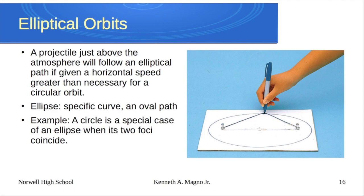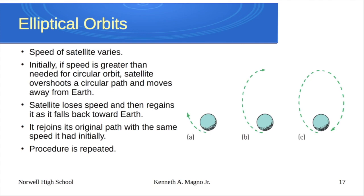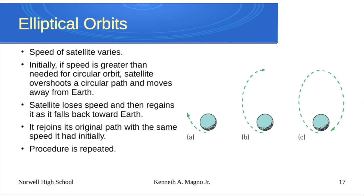A circle is an ellipse — it's just that special case where the two foci collapse in on themselves. Even our planets have slightly elliptical orbits, very close to circles but still slightly elliptical. In an elliptical orbit, the speed varies: when close to Earth, the satellite goes faster and overshoots, going higher; then it slows down and comes back. That process repeats — faster, slower, comes back — and that's how the satellite orbits.